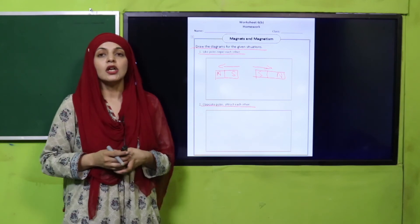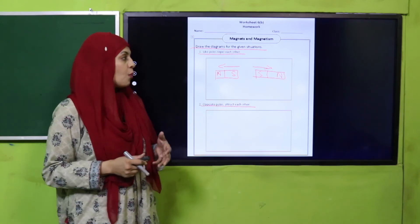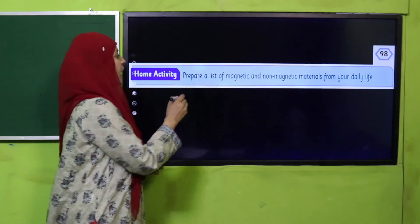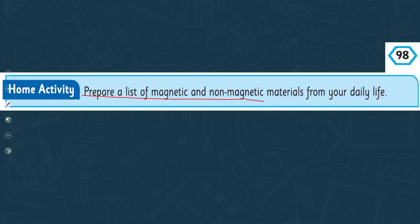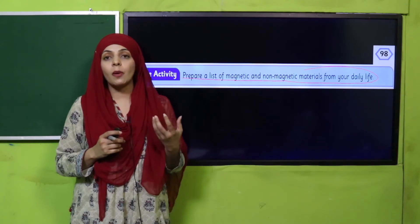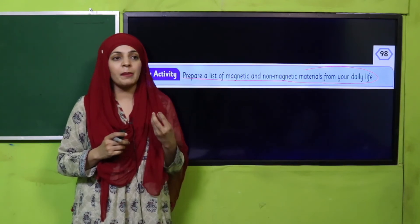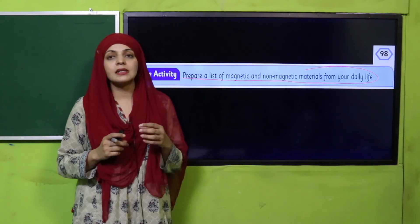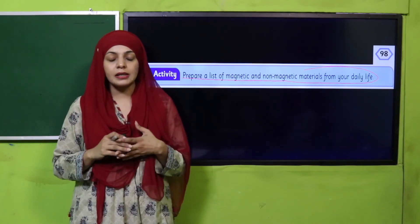You also have a home activity in which you will prepare a list of magnetic and non-magnetic materials from your daily life. Some magnetic materials which are attracted by the magnet - make their list. And some objects which are non-magnetic like paper, pencil, plastic, glass - these are all non-magnetic. Prepare a list of them.